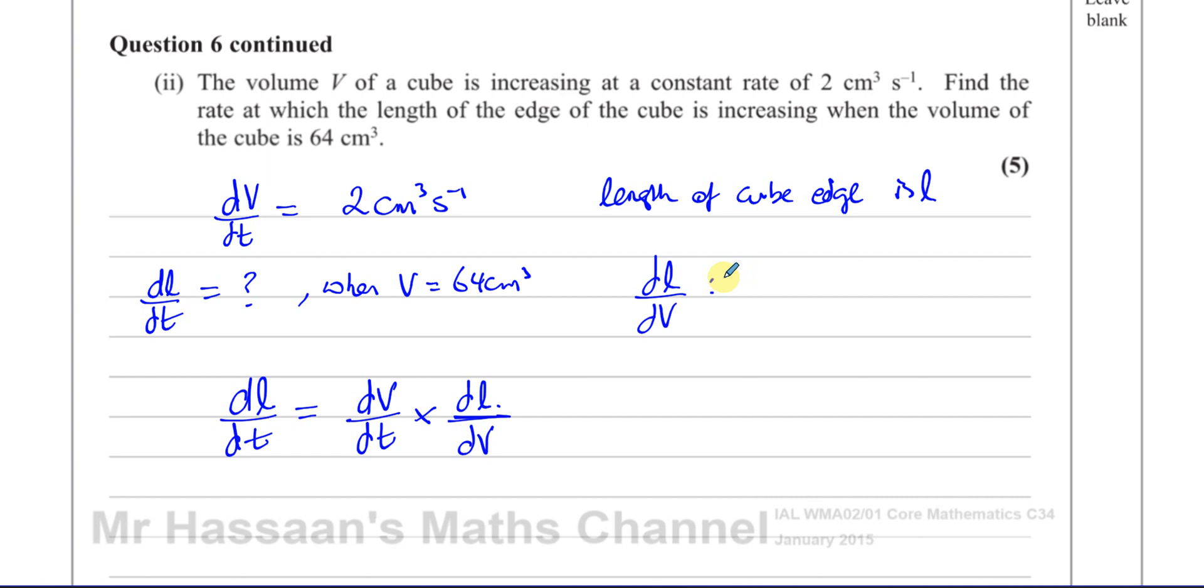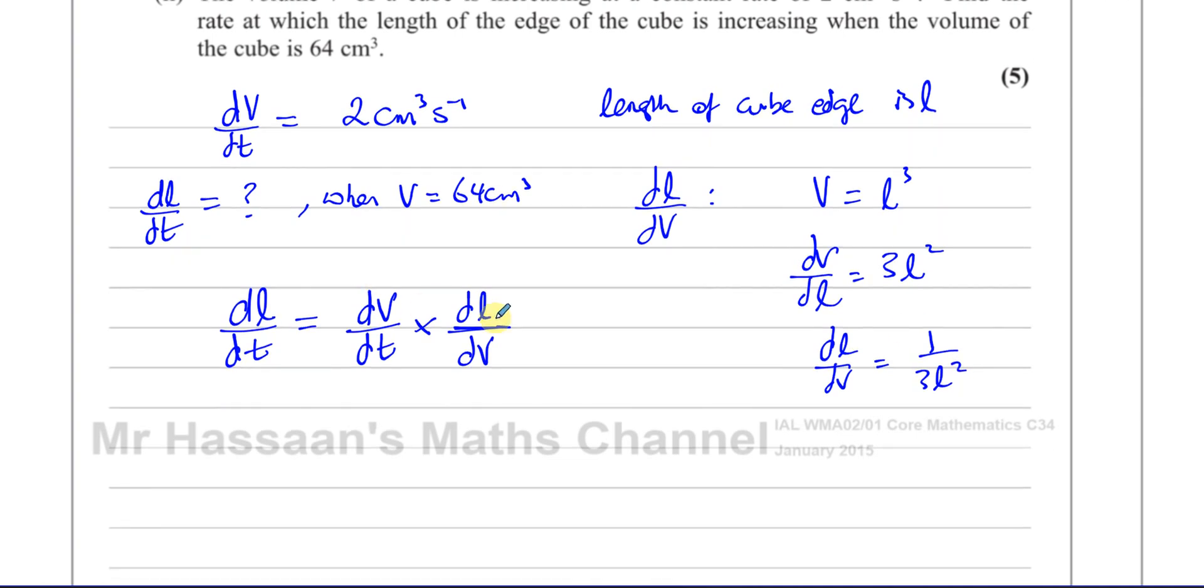Now, that means I need to have an expression for the volume of this cube in terms of the cube length, the edge. Now we know a cube is a cube. All the lengths are the same in a cube. So the volume of a cube is basically just L cubed. You have L, L, L. So the volume is equal to L³. So we know V equals L³. So I can find an expression for dV/dL. dV/dL is 3L². So we want dL/dV. Now, dL/dV is going to be the reciprocal of that, which is 1 over 3L².